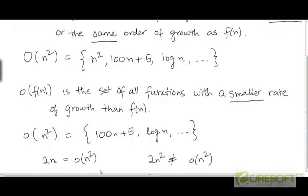Here are two examples: 2n and 2n². Both are in big-O(n²). 2n is in big-O(n²) because it has a smaller rate of growth than n². 2n² is in big-O(n²) because it has the same rate of growth as n². But 2n is in little-o(n²) because it has a smaller rate of growth than n², whereas 2n² is not in little-o(n²) because it has the same rate of growth as n².